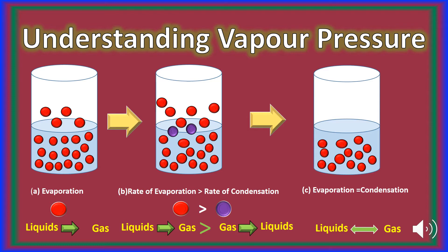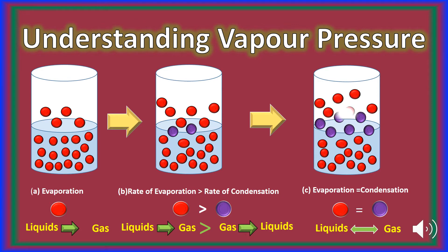Evaporation is the change of the liquid into the gaseous state, represented by the red circles, whereas condensation is the change of gases into the liquid state, represented by the purple circles. But with the passage of time, the rate of evaporation becomes slower while the condensation rate becomes faster and faster. Ultimately the two rates become equal, as shown in the third diagram — the rate of evaporation equals the rate of condensation, where liquid changing into vapor equals vapor changing into liquid.